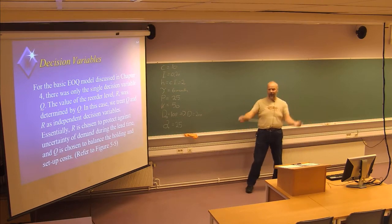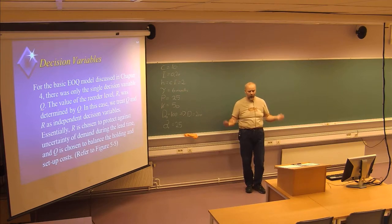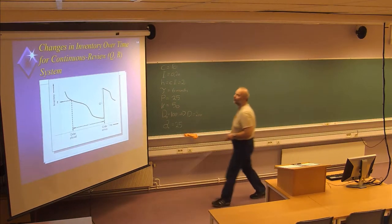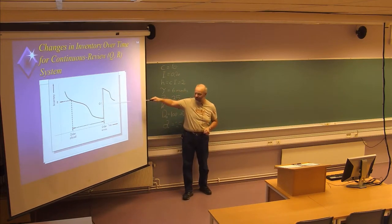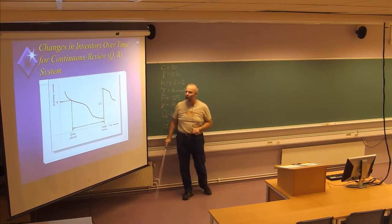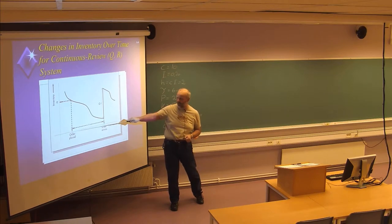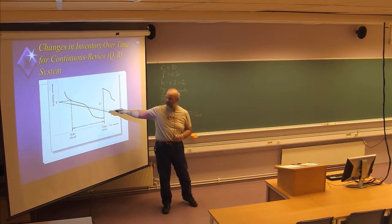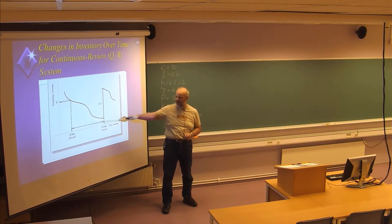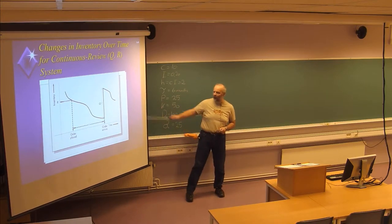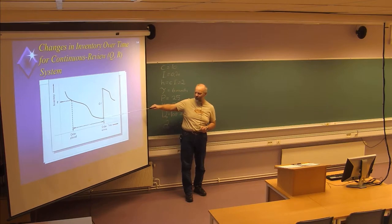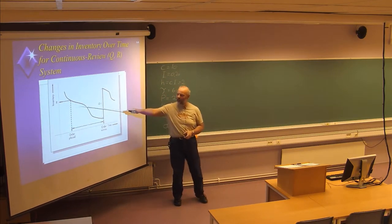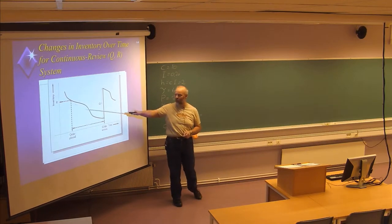The safety stock is defined as the average level of stock when you receive a new order. Graphically, the order size is Q. The lead time is the interval between placing and receiving an order. The reorder point is the inventory level when the order is placed. You have a variable demand, and sometimes — with a given probability — you will have a stock-out where you cannot meet the demand.